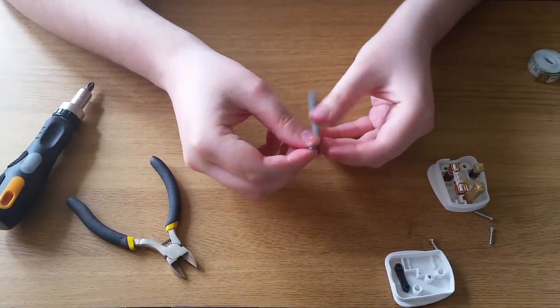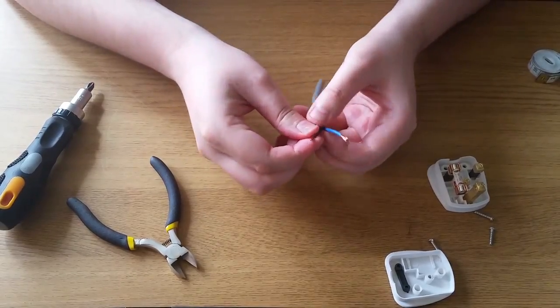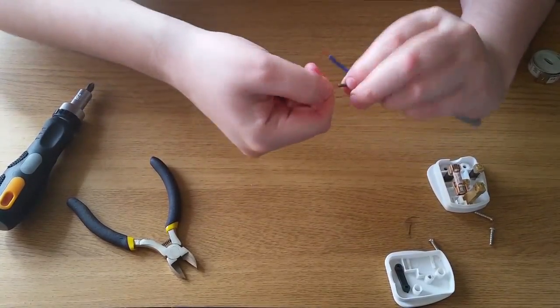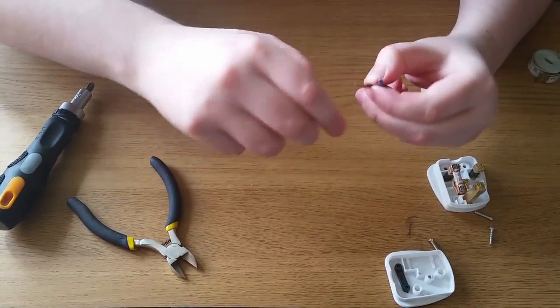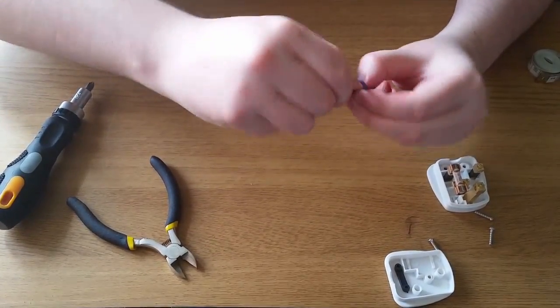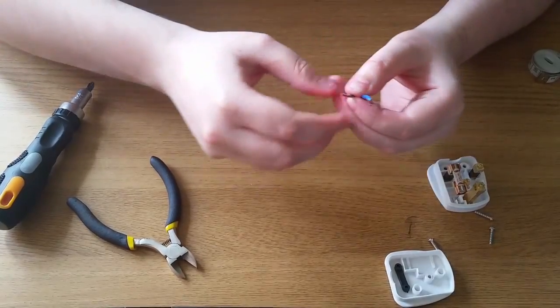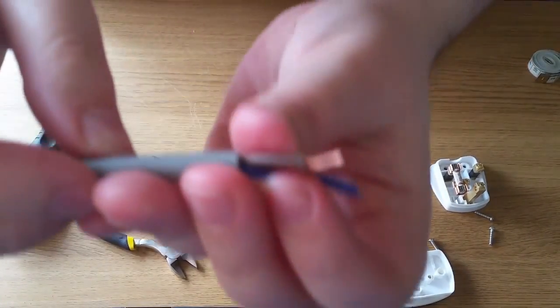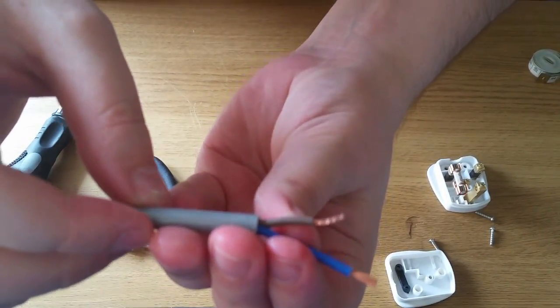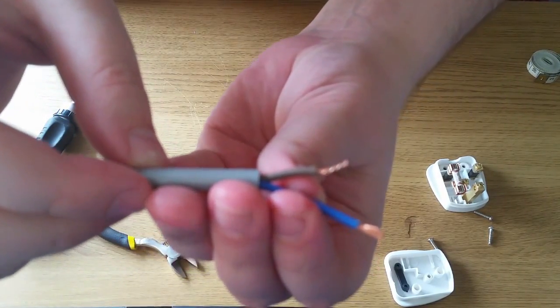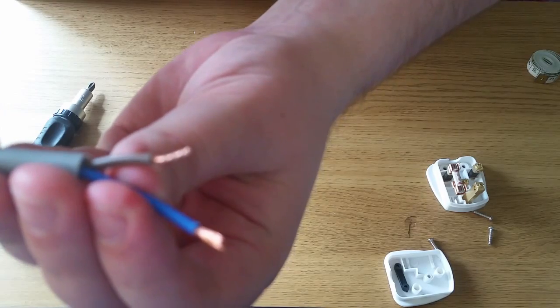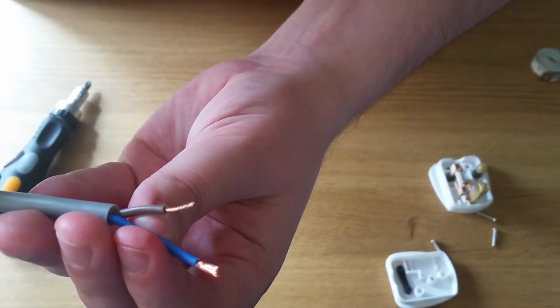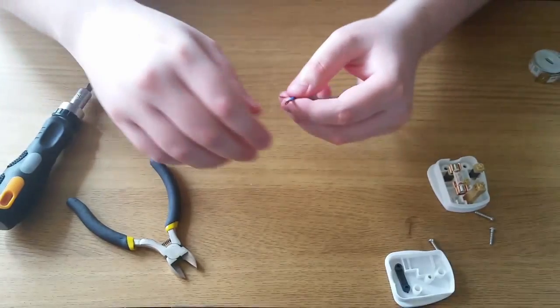Once each wire is stripped, I twist the copper braid so they are just neat and tight together. I'm trying to get a nice close-up for you guys. Like so. This is how it should look. Again, do the same for the other wires by twisting them nice and neatly together.